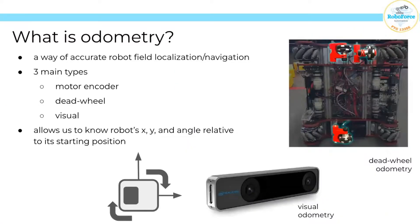So, what is odometry? Well, let's start off by defining it. It's a way of accurate robot field localization and navigation. In general, there are three main types: motor encoder, dead wheel — which we will be focusing on mostly for today — and visual.